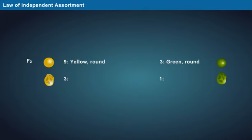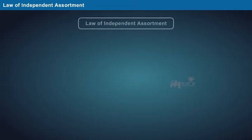round green, wrinkled yellow, wrinkled green. Thus, the law of independent assortment stated that genes located on different chromosomes will be inherited independently of each other.